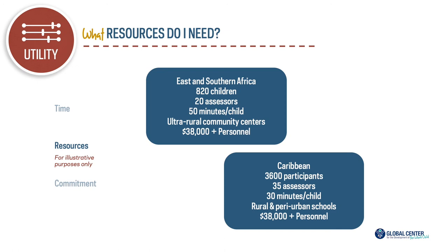I pulled together two different budgets from projects I've worked on that came out to about the same amount — about $38,000 for one round of data collection, plus personnel and fringe time. One project was in East and Southern Africa with about 820 children, 20 trained assessors, taking about 50 minutes per child in an ultra-rural area an hour from the field site. The other was in the Caribbean with about 3,600 participants, 35 assessors, taking about 30 minutes per child in primarily peri-urban schools. While the final budget was about the same, the particulars of each budget changed quite markedly.